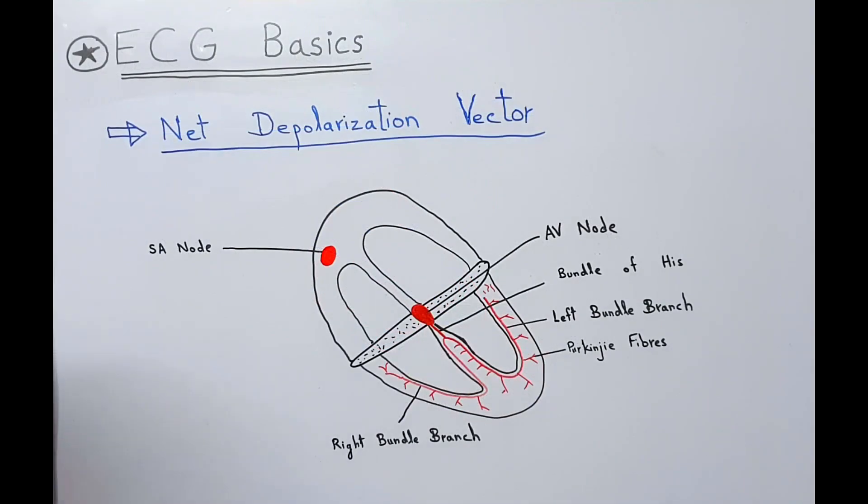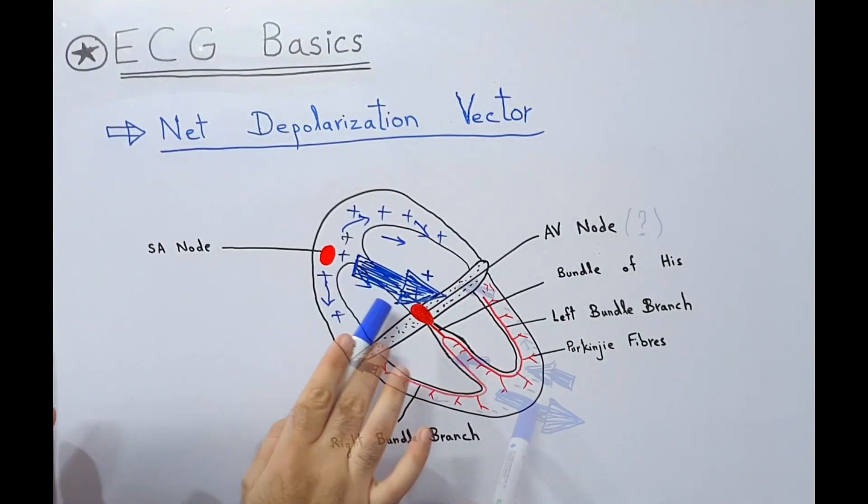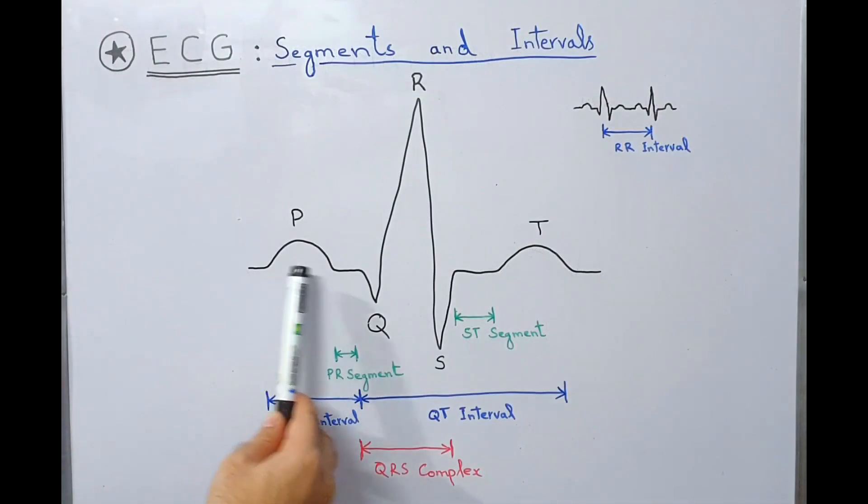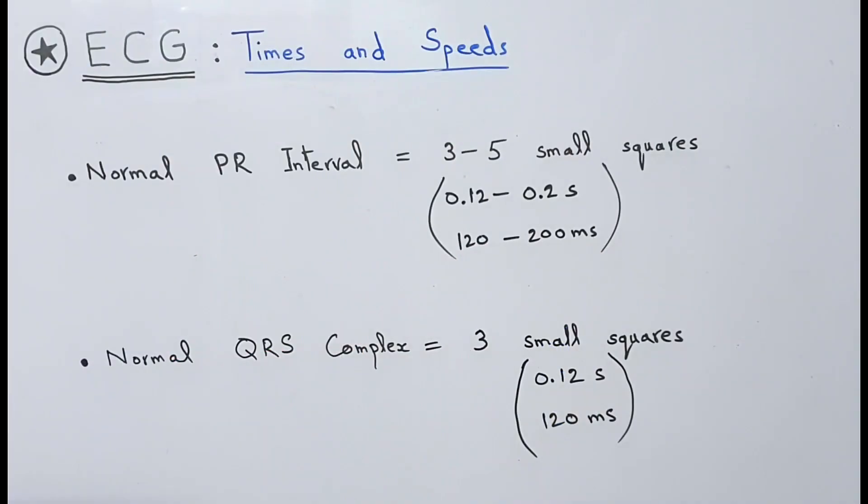Then we saw net depolarization vectors and their directions as the current moves through different parts of the heart and how these depolarization vectors are correlated to the formation of ECG. We have also seen different segments and intervals of the ECG, different times and speeds, normal values of different intervals.